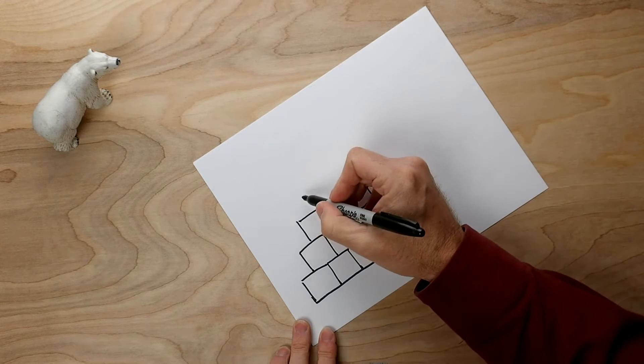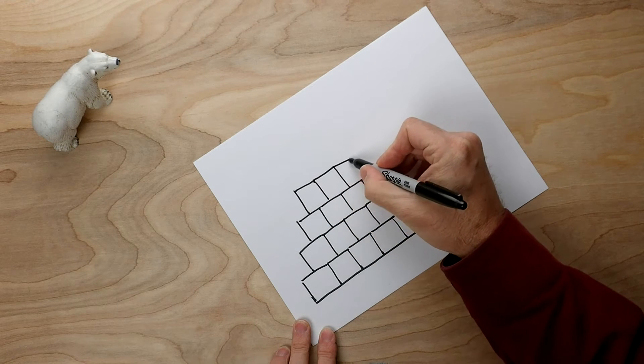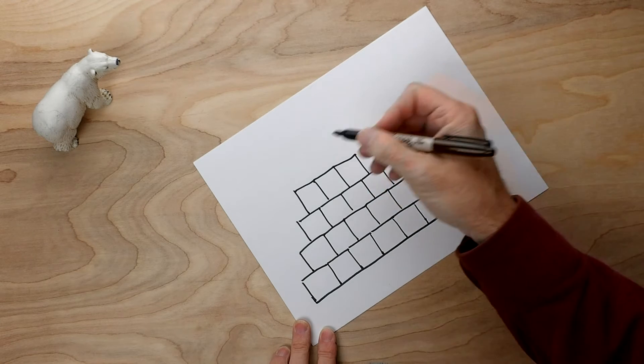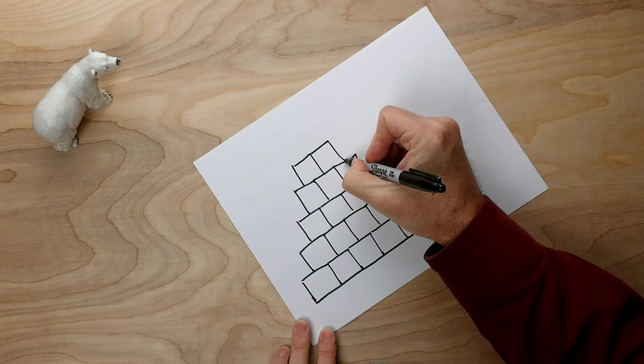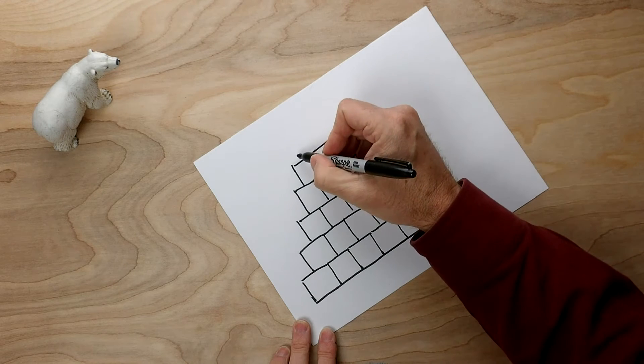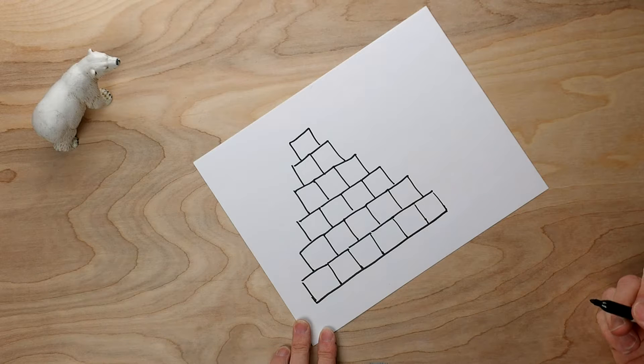Four on that row. Three on that row. Two on that row. And you guessed it, one more on top. That's a good pyramid.